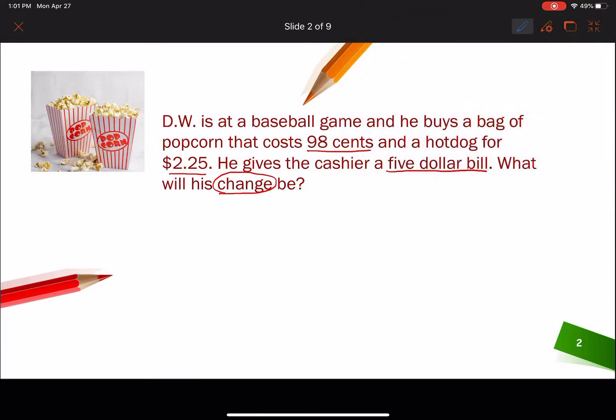Alright, welcome back, guys. So we're going to go ahead and we need to find out how much DW is spending. So we need the total cost. To find that out, we need to add up the items that he bought. Well, he bought two items, a bag of popcorn for 98 cents. There's no dollars on that one, so we're going to make it 98 cents plus a hot dog for $2.25. And we want to figure out what that equals.